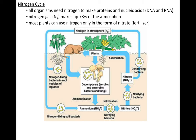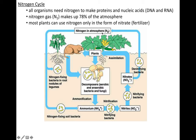Nitrogen is very important — you need it to make proteins and to make DNA and RNA. 78% of the air that we breathe is nitrogen, but plants cannot use nitrogen gas (N2) directly. Plants need nitrogen because it's one of their major nutrients. They generally get it from soil or fertilizer added to the soil, and in soil, the fertilizer is added as a nitrate. Plants like nitrates — they cannot use nitrogen gas.